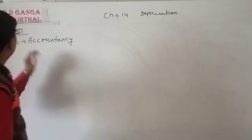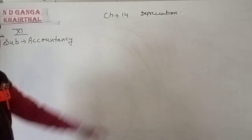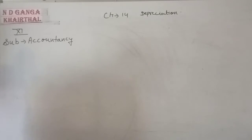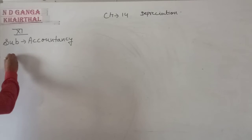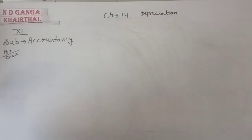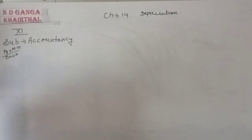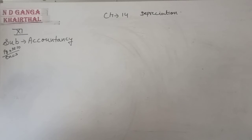Chapter 14: Depreciation. Today we will start problem number 14.10. Ram purchased a machine on 1st October 2016, costing 1,50,000 rupees, and spent 10,000 rupees on installation. The machinery life is 10 years and estimated residual value is 10,000 rupees after 10 years. We will prepare the machinery account and provision for depreciation account for 3 years.